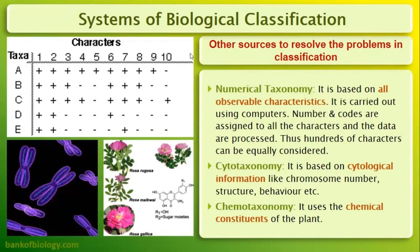Numerical taxonomy is based on all observable characteristics. Whatever characteristics are observed, we count them, and numbers and codes are assigned to all characteristics. For example, if a flower has a pentamerous floral character, it is given a specific number and code — since five-parted flowers may repeat many times. Every character has a code and a number, and these are stored and processed to identify close characteristics among organisms for biological classification.